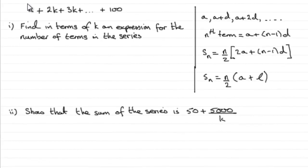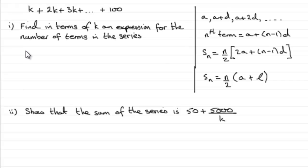Now in part B, we're given this new series starting with k, adding 2k, 3k, and so on until we get up to 100. We're told k is a factor of 100. It comes in two parts, worth four marks in all. We're asked to find, in terms of k, an expression for the number of terms in this particular series. And then in part two, we've got to show that the sum of that series comes to 50 plus 5,000 all over k.